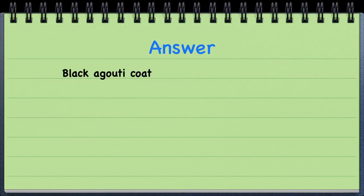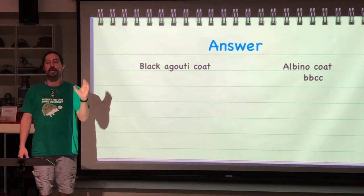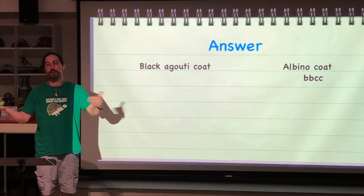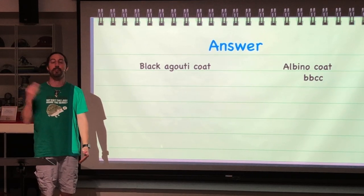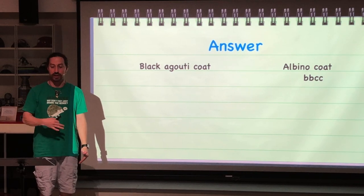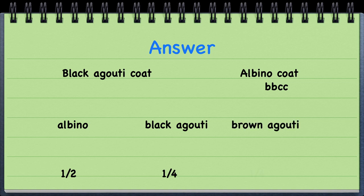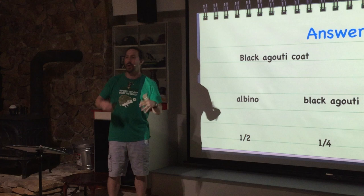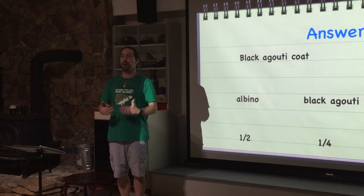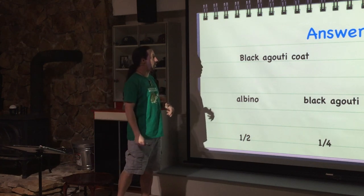One parent had a black agouti coat; the second parent had an albino coat. The albino parent had the genotype homozygous recessive for the B gene, and we know it must be homozygous recessive for the C gene. We're told that half of the offspring were albino, a quarter were black agouti, and a quarter were brown agouti. We need to figure out the genotype of the black agouti parent.